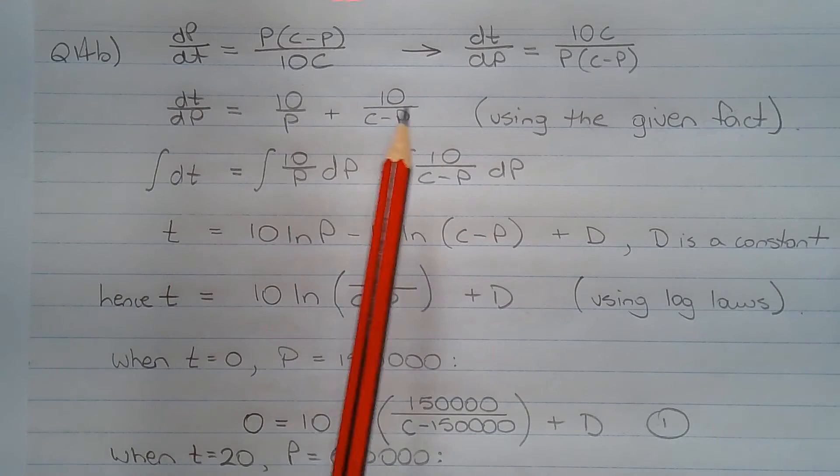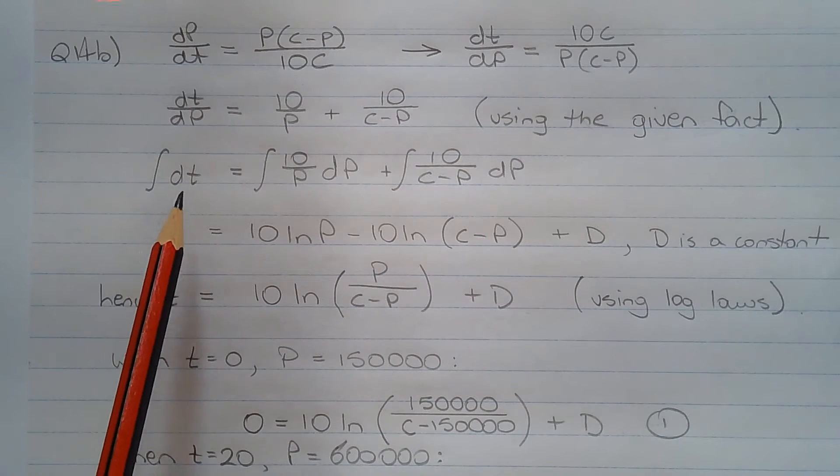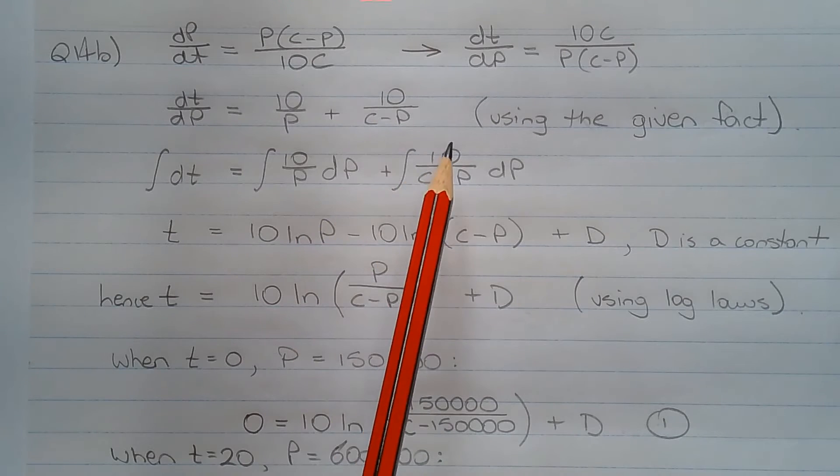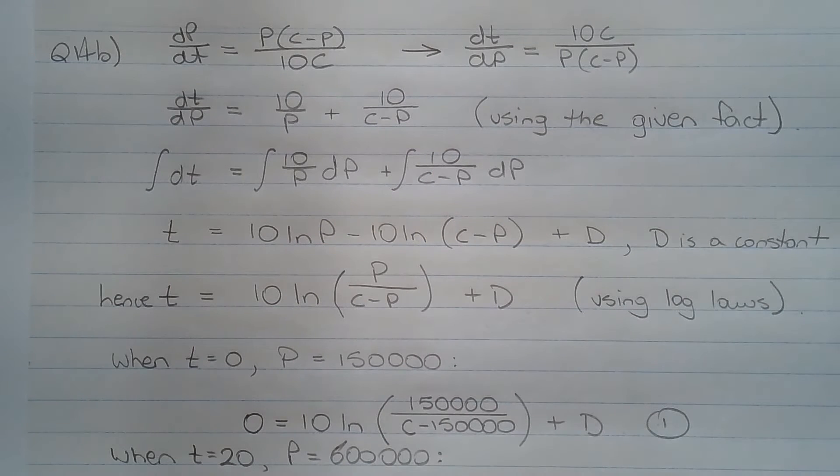Multiplying all terms by dp, we have dt equals 10 over p dp plus 10 over (c minus p) dp. Then we can take the integral of both sides. So integrating all terms of the equation, we get t equals 10 ln p minus 10 ln(c minus p) plus the constant d. And I've used the letter d so as not to confuse it with the letter c here.